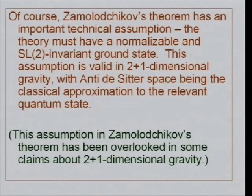Of course, there's an important technical assumption in Zamolodchikov's C theorem. The theory must have a normalizable and SL(2) invariant ground state. This assumption is valid in 2 plus 1 dimensional gravity, with the anti-de Sitter space being the classical approximation to the relevant quantum state.